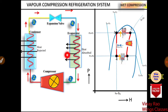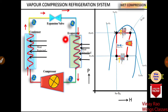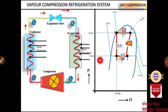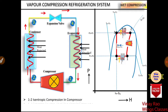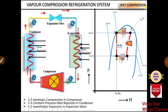Heat is absorbed at constant pressure in the evaporator. To summarize: the evaporator works at constant pressure, the condenser works at constant pressure, the expansion valve works isoenthalpically, and the compressor works isentropically. These are the isentropic lines, these are the isoenthalpic lines, and these two pairs are constant pressure lines. This is the P-H chart for the vapor compression refrigeration system with wet compression.